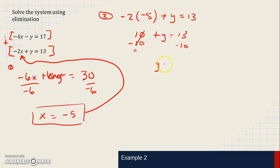This is an identity, so it becomes 0. And when I add it, it's just y. And 13 minus 10 is 3. So y is 3. I found x over here. I found y here. I write them as an ordered pair.